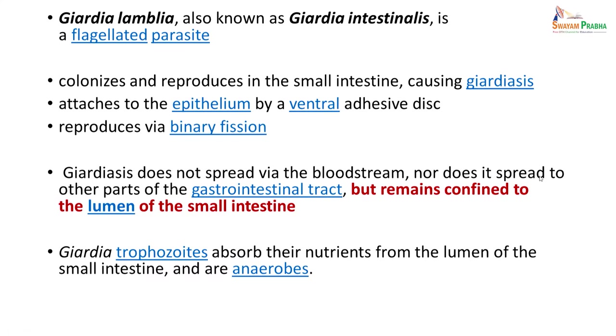Giardia lamblia, also known as Giardia intestinalis, is a flagellated protozoan that colonizes and reproduces in the small intestine, causing Giardiasis. It attaches to the epithelium by the ventral adhesive disc and reproduces by binary fission. Giardia does not spread via the bloodstream nor to other parts of the GI tract. It remains confined to the lumen of the small intestine, where the trophozoites absorb nutrients. It is anaerobic and does not need oxygen for survival.